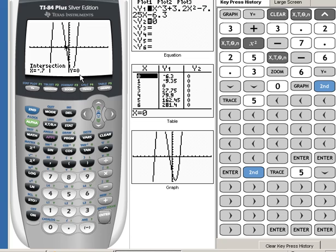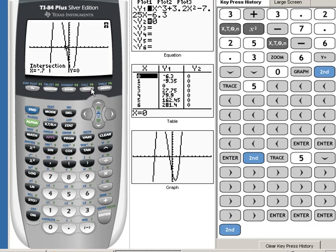Well, again, that's an x-intercept, so we're going to write that down, make note of it. Finally, we have that third one here, so we're going to repeat the process. Second trace, number 5 for intersect.